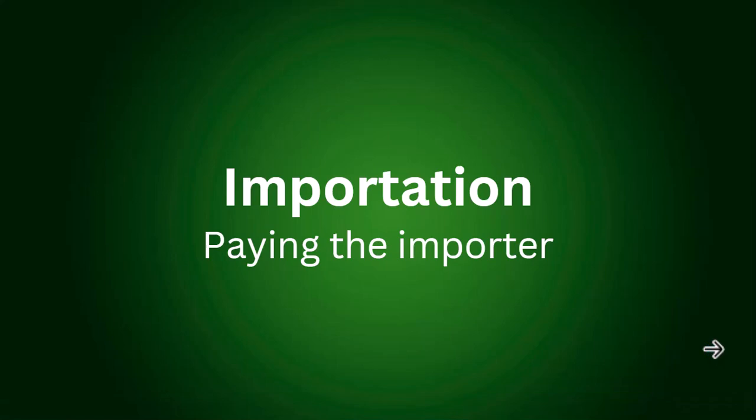The importer is only paid when the product arrives in Nigeria. They'll tell you the weight — maybe 2 kg, 5 kg, or 10 kg — and give you the total amount. You transfer the money to them, then go and collect the product at the airport or their office in Lagos. You can also send a rider to collect it for you. If you're outside Lagos, you can arrange collection or have someone send it to you. The payment to the importer is in naira, converted from dollars at their own rate.